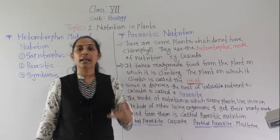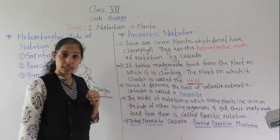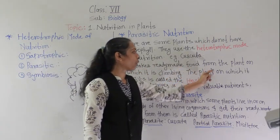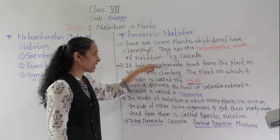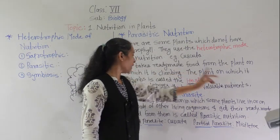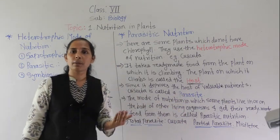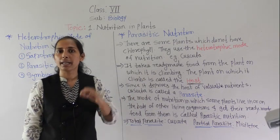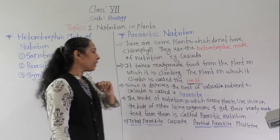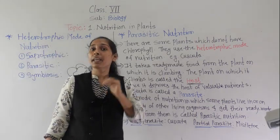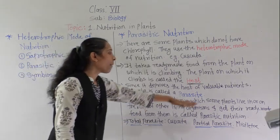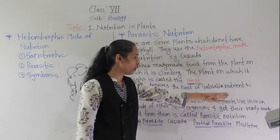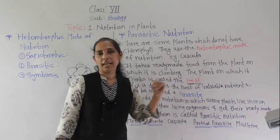The plant on which it climbs and from which it gets ready-made nutrients — that plant is called the host plant. It takes ready-made food from the plant on which it is climbing. Since they are taking the ready-made food, they are called parasites. Since it deprives the host of valuable nutrients, cascuta is called a parasite.